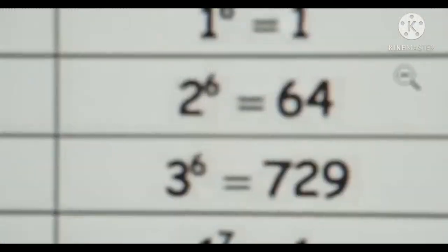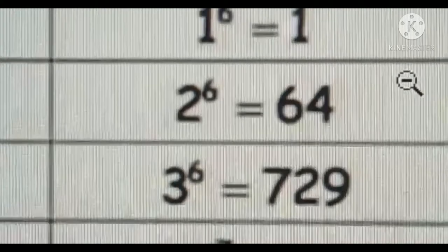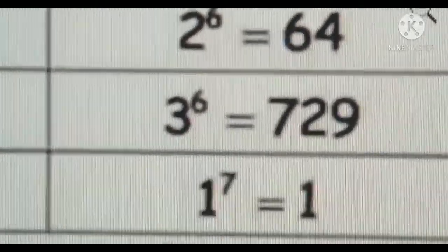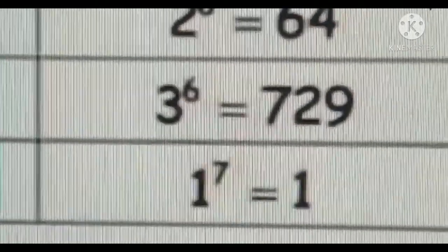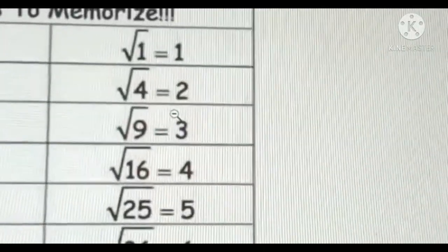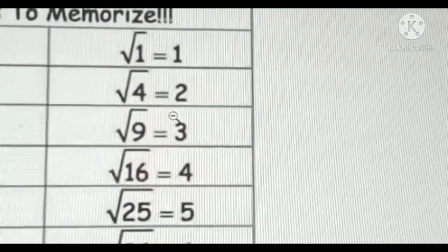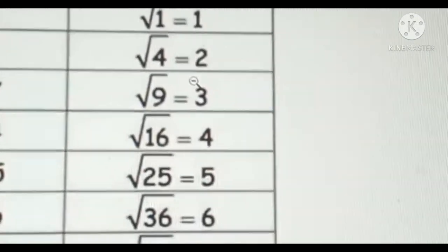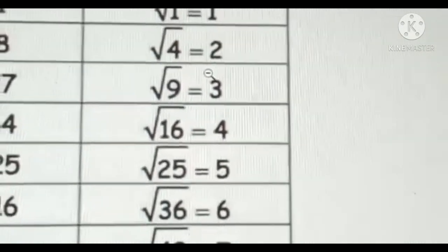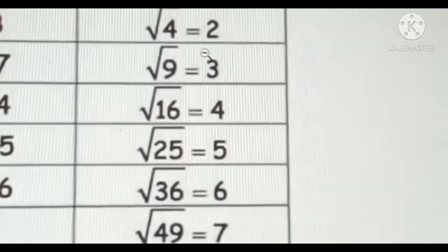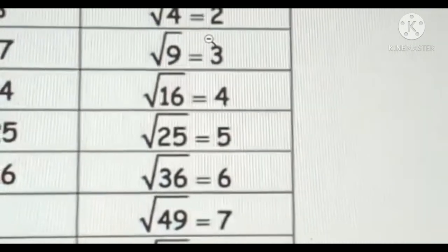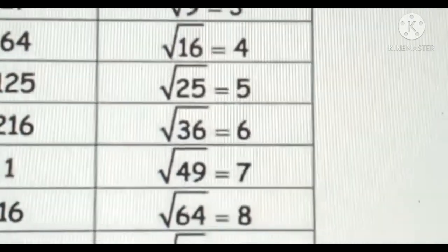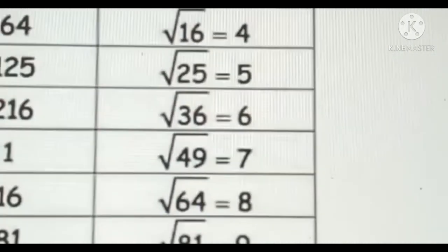3 to the power of 6 is equal to 729. 1 to the power of 7 is equal to 1. Square root of 1 is equal to 1, square root of 4 is equal to 2, square root of 9 is equal to 3, square root of 16 is equal to 4.